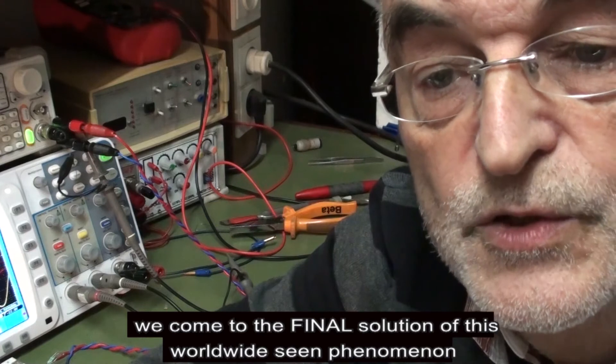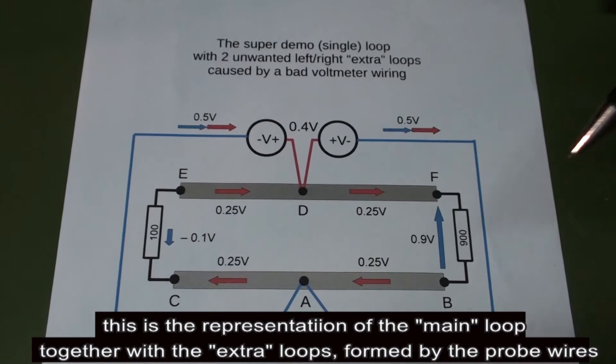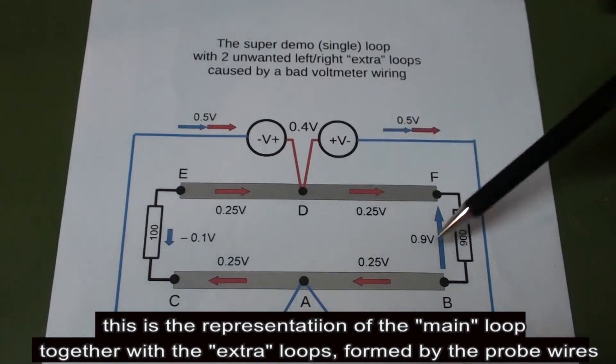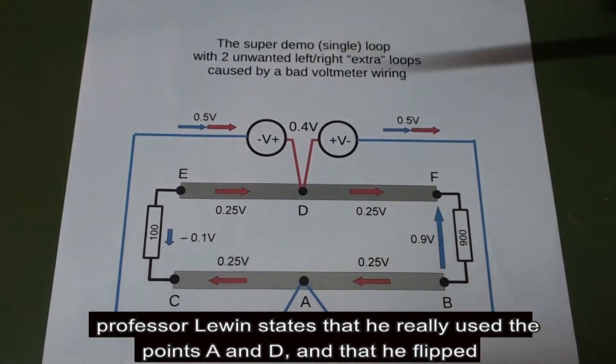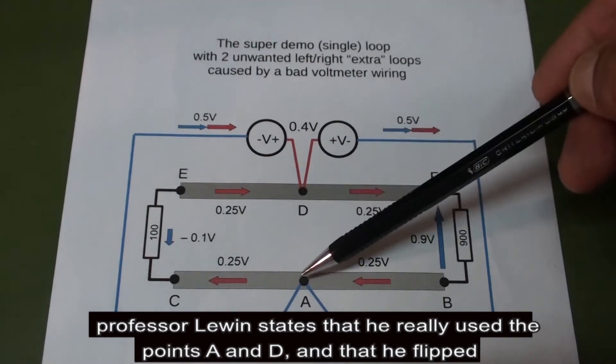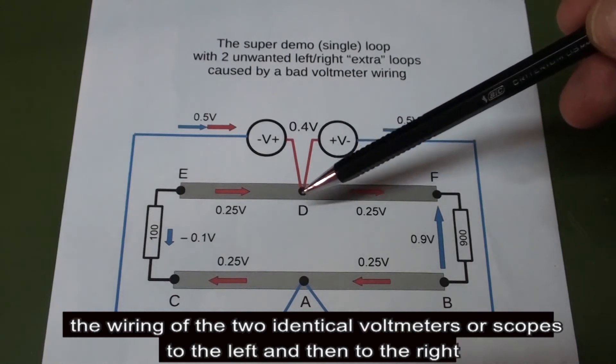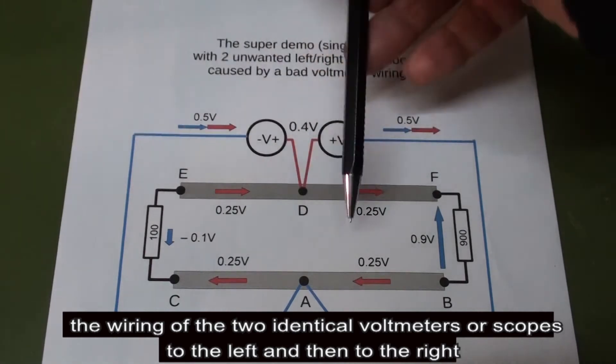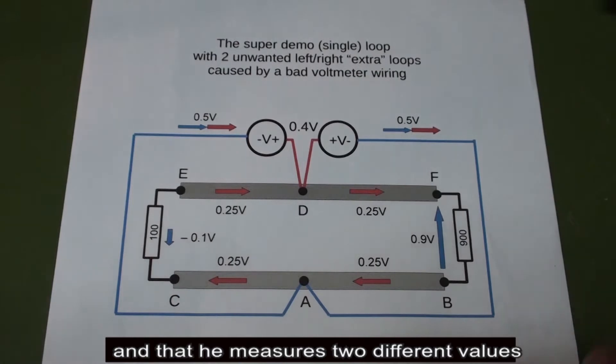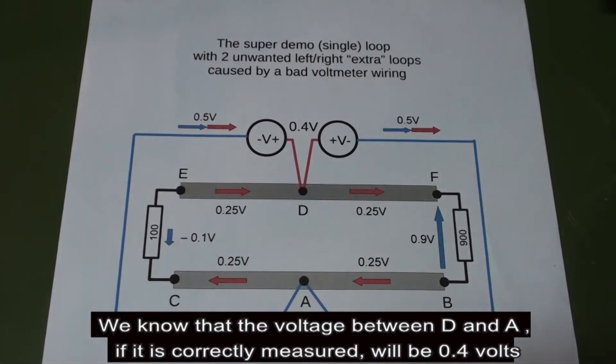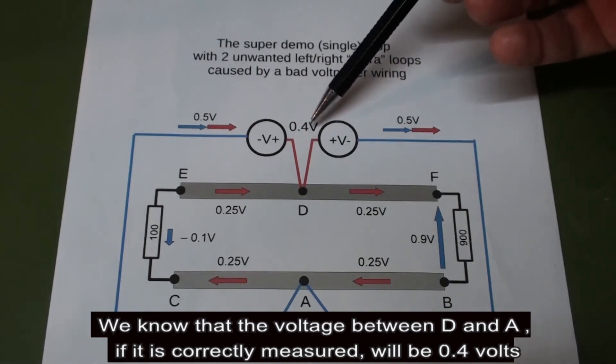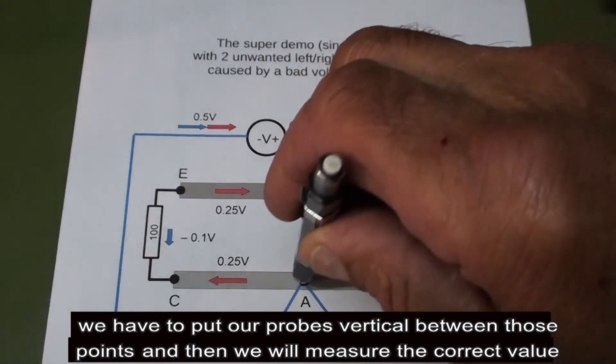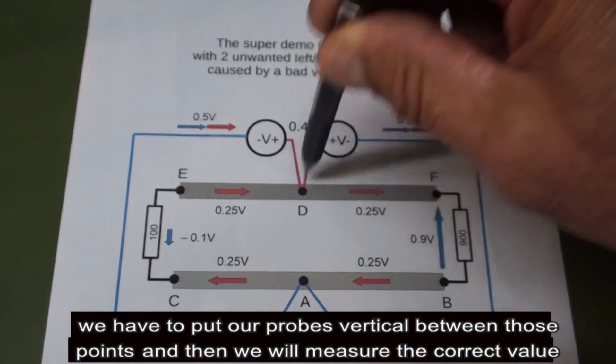We come to the final solution of this worldwide phenomenon. This is the representation of the main loop together with the extra loops formed by the probe wires. And Professor Lewin states that he really used the points E and D, and that he flipped the wiring of the two identical voltmeter oscilloscopes to the left and then to the right, and that he measures two different values. We know that the voltage between D and E, if it is correctly measured, will be 0.4 volts. So we have to put our probes vertical between these two points, and then we will measure the correct value. There is no discussion about this.